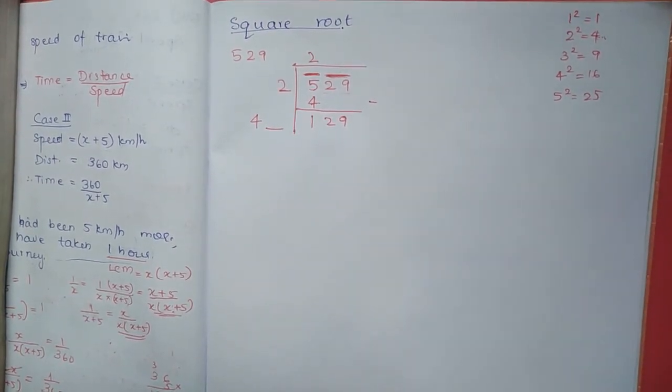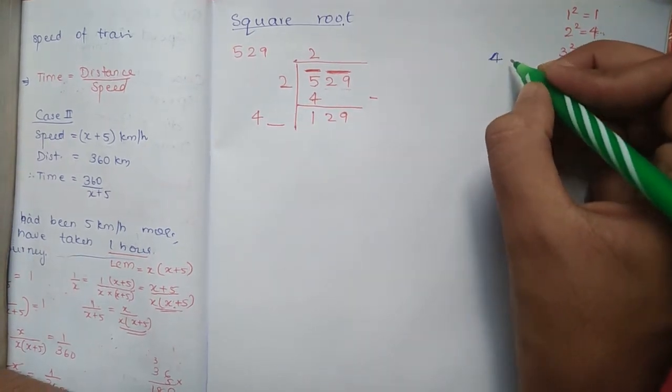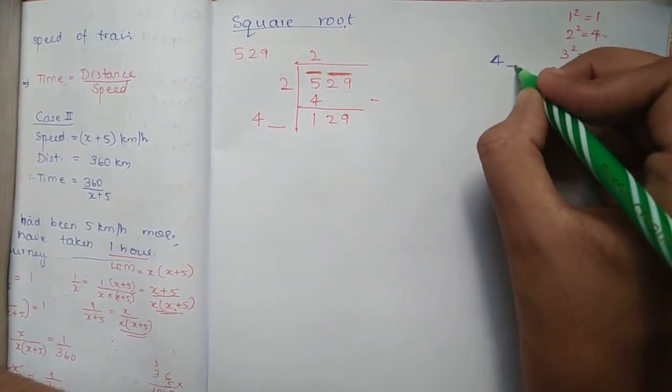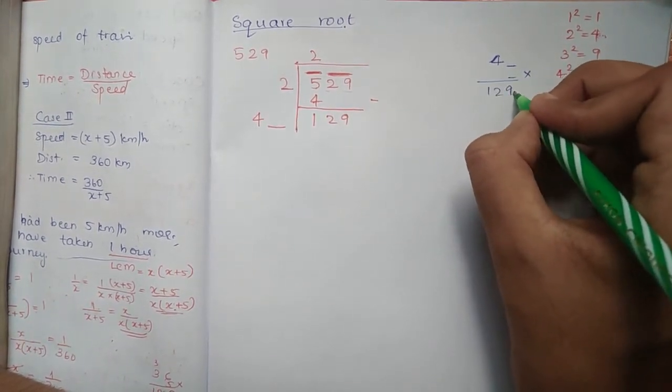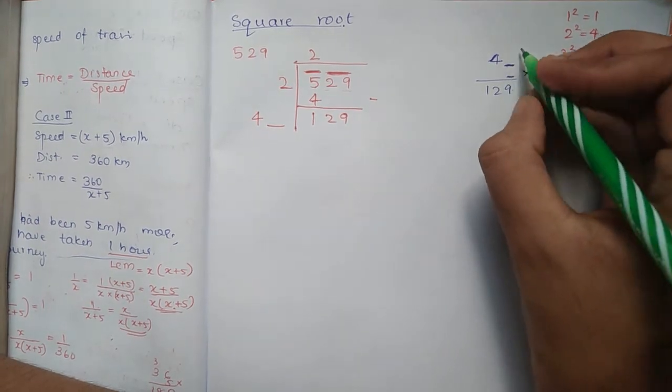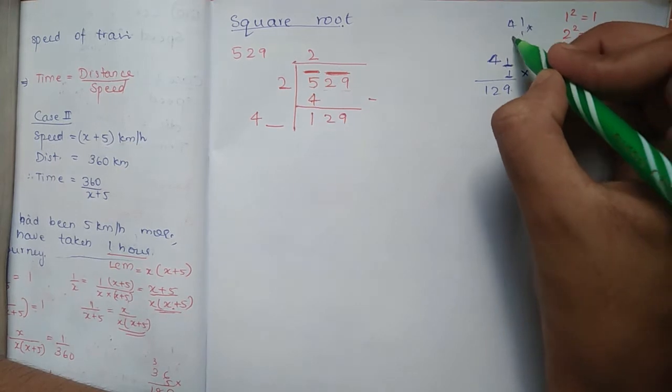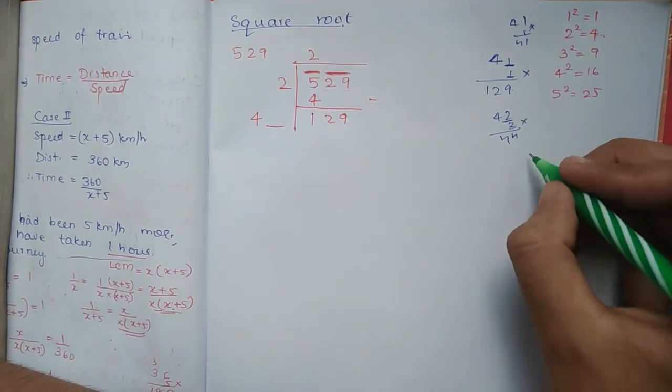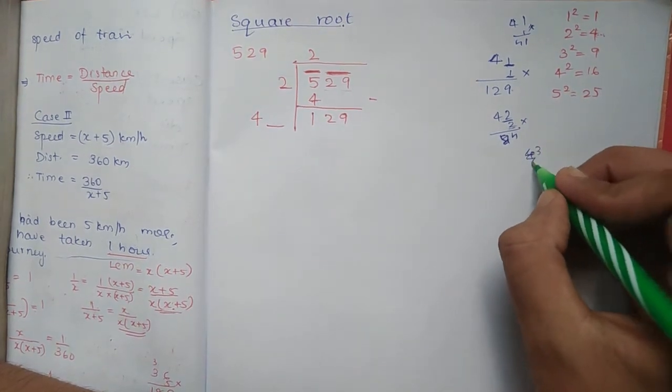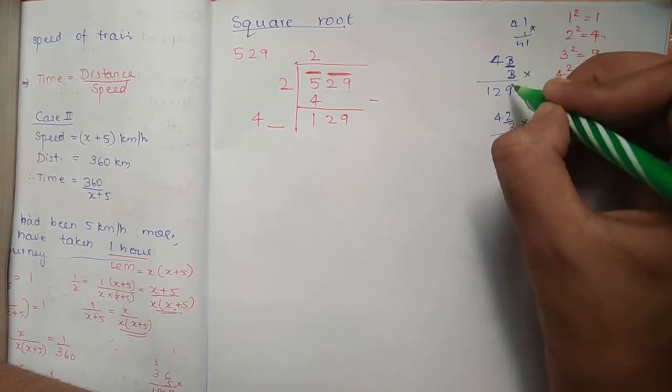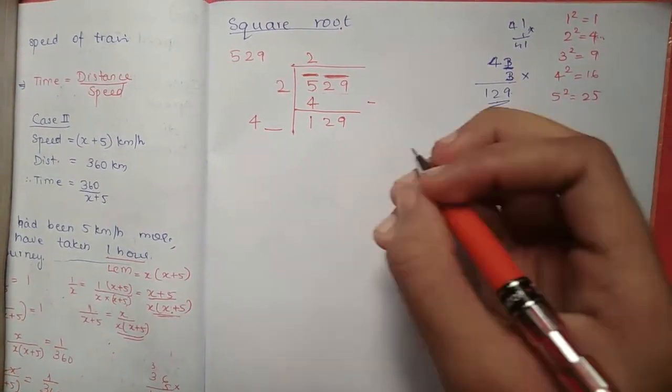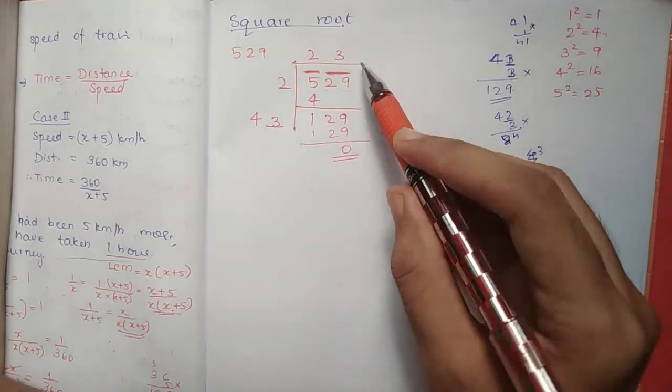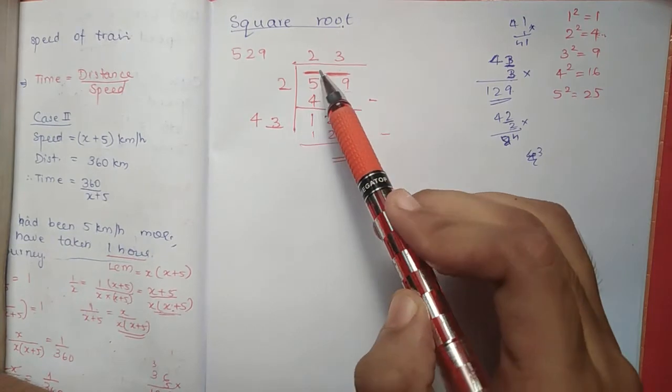Let us show one number. 8 to start 129. For each number, 7. The answer is 129. We try 44. 44 and 3 will replace. 3 into 3 is 9, and 3 into 4 is 12. Now 129 minus 129 is 0. So the answer is 23. The square root of 529 is 23.